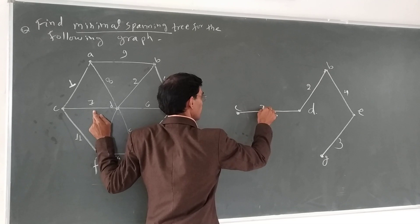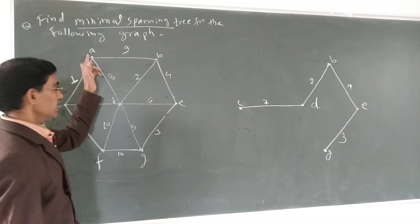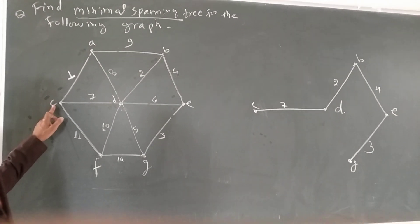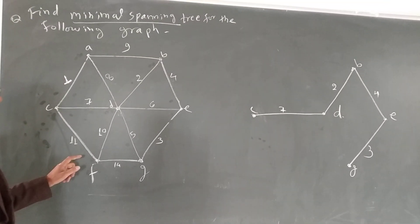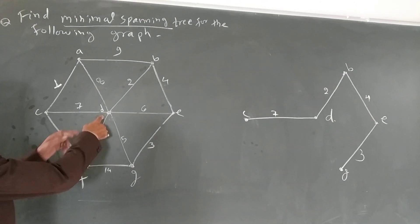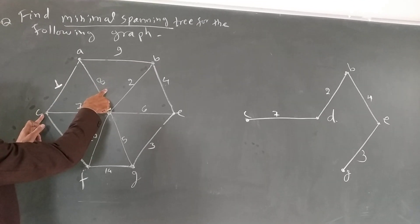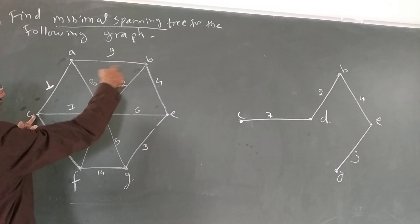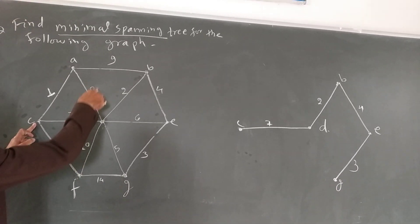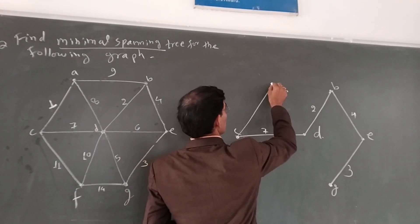DC edge लेते हैं जिसका weight 7 है। अब 5 vertices include हो चुके हैं: D, B, E, G, C। 2 और चाहिए: A और F। A को include करने के लिए — D से 8, C से 1, B से 9 — इनमें minimum 1 है। F के लिए D से 10 है। सबसे minimum 1 है, तो CA edge लेते हैं।